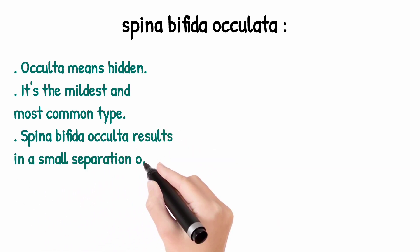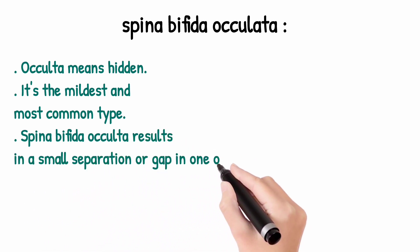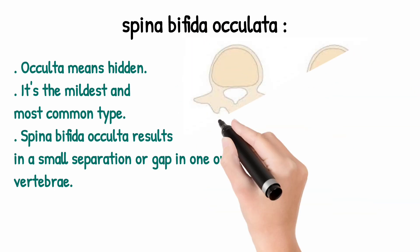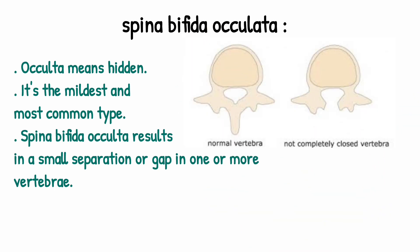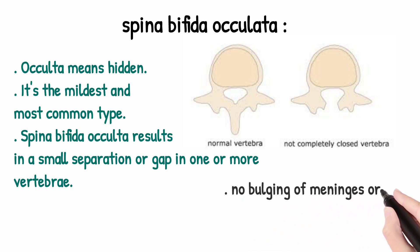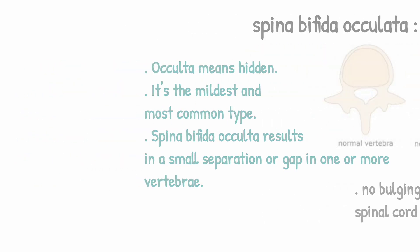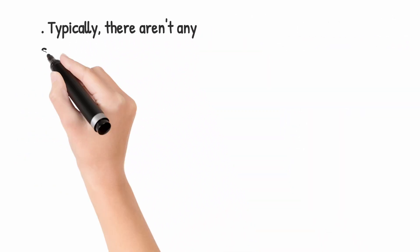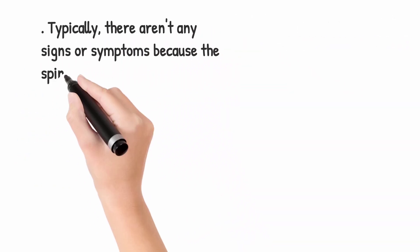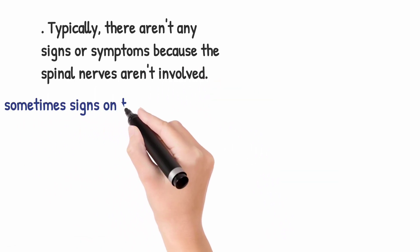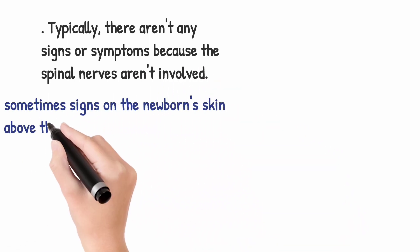Spina bifida occulta results in a small separation or gap or defect in one or more vertebra. In this image, you can see a defect in the posterior part of the vertebra. No bulging of meninges and spinal cord occurs in this condition. Typically, there are no signs and symptoms because the spinal cord and nerves are not involved.